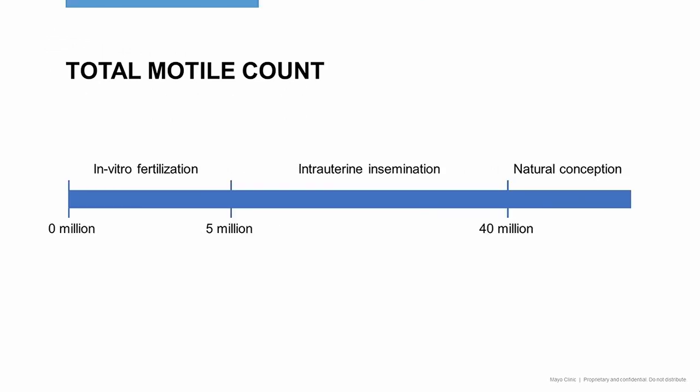In general, natural conception is more likely with at least 40 million total motile sperm. Intrauterine insemination requires at least 5 million total motile sperm, and in vitro fertilization may be a better option for those with a total motile sperm count less than 5 million.